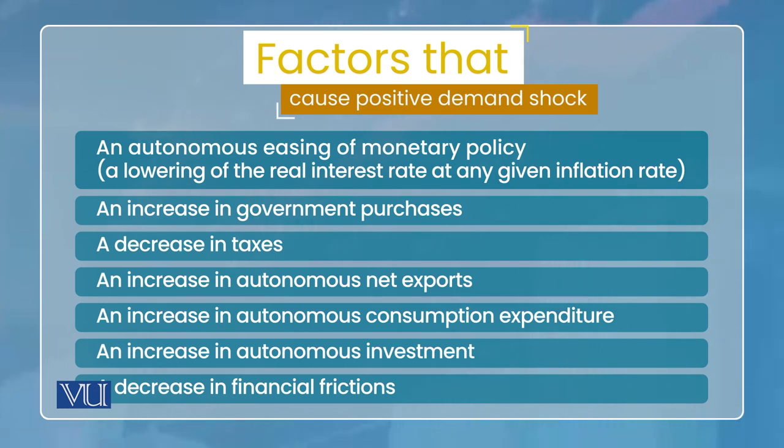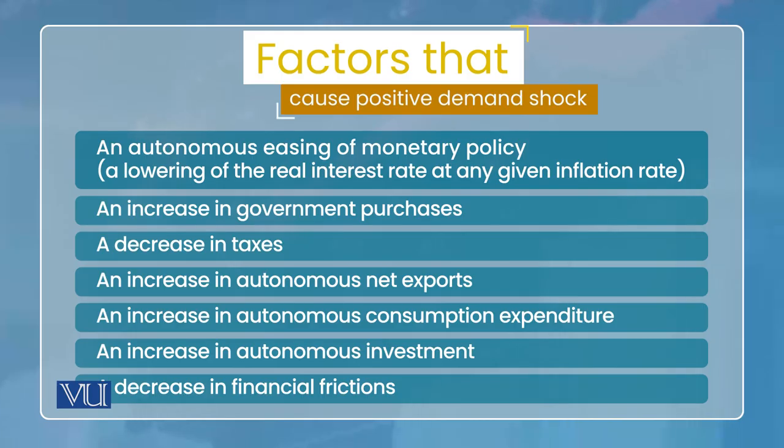Ye jitne bhi hain shocks, in sab ko hum kahenge ye positive demand shocks hain. Matlab ye autonomous component mein aisa change hai jo aggregate demand ko badhaate hain. Positive is liye ke ye demand badhaate hain; shock is liye ke ye autonomous component mein change aaya hai - ye koi induced component mein gradual change nahi hai, ye all of a sudden ho sakta hai. Jaise central bank ek dam interest rate jo jis formula se set kar raha tha, us ki bajaaye all of a sudden ek different level pe interest rate ko le jaaye to hum kahenge ye monetary policy shock hai - positive ya negative bhi ho sakta hai. Interest rate kam kar de to hum kahenge ye positive aggregate demand shock hai.